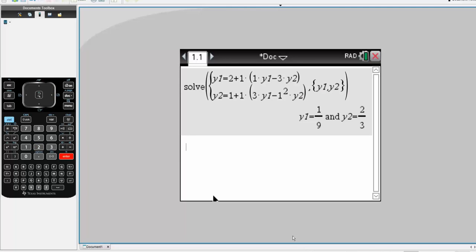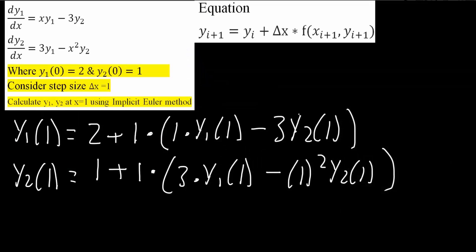Simply hit enter. And this right here is the final answer. So y1 parenthesis 1 is equal to 1 over 9. And y2 parenthesis 1 is equal to 2 over 3. So just to be clear,